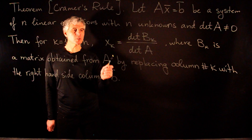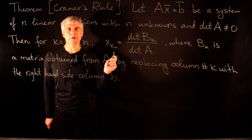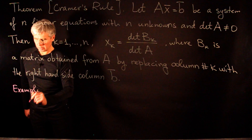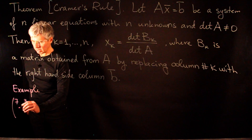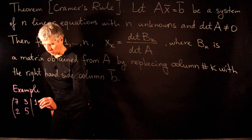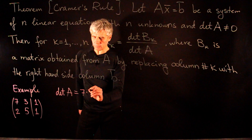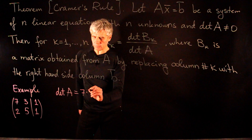So Cramer's rule gives an explicit formula for the solutions of a system of linear equations when the solution is unique. Let us do a simple example: a 2 by 2 system with matrix [7, 3; 2, 5] and right-hand side column [1, 1]. The determinant of A is 7 times 5 minus 2 times 3 = 35 minus 6 = 29.